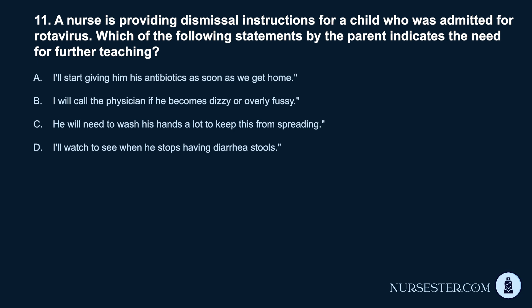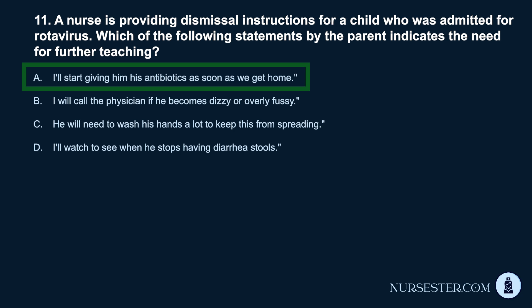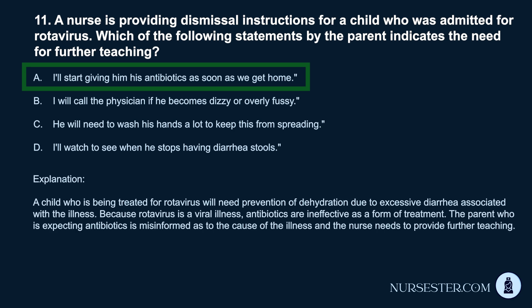Question 11. A nurse is providing dismissal instructions for a child who was admitted for rotavirus. Which of the following statements by the parent indicates the need for further teaching? a. 'I'll start giving him his antibiotics as soon as we get home.' b. 'I will call the physician if he becomes dizzy or overly fussy.' c. 'He will need to wash his hands a lot to keep this from spreading.' d. 'I'll watch to see when he stops having diarrhea stools.' Correct answer: a. Because rotavirus is a viral illness, antibiotics are ineffective as a form of treatment. The parent expecting antibiotics is misinformed, and the nurse needs to provide further teaching.